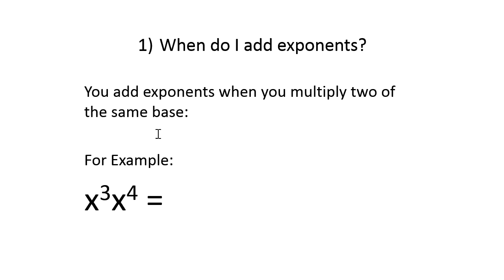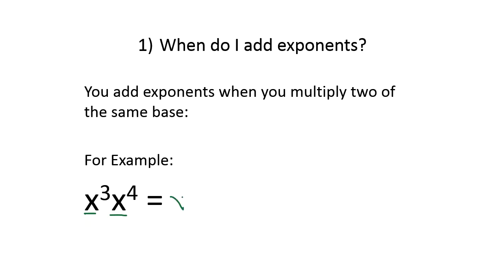We add exponents when we multiply two of the same base. So for example if we multiply x cubed times x to the fourth, we're going to add the three and the four, giving us x to the three plus four, or x to the seventh.